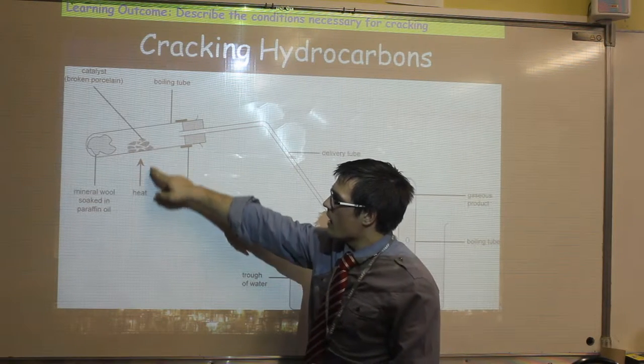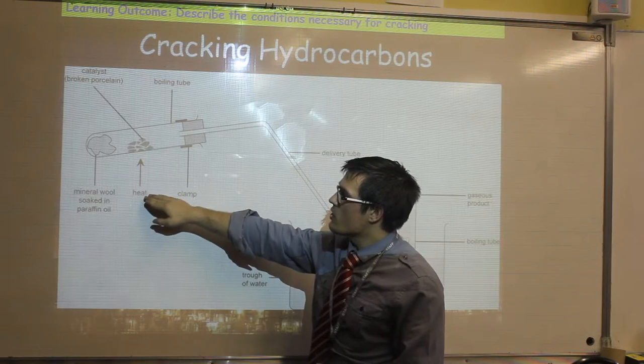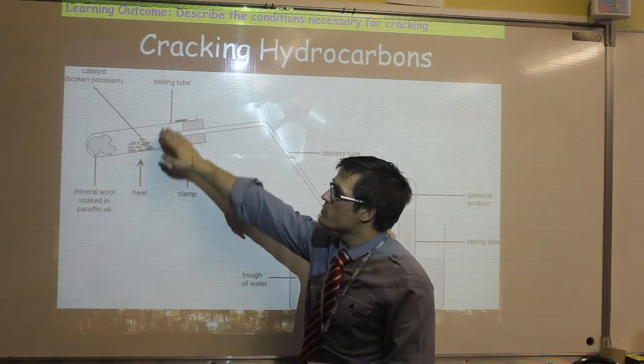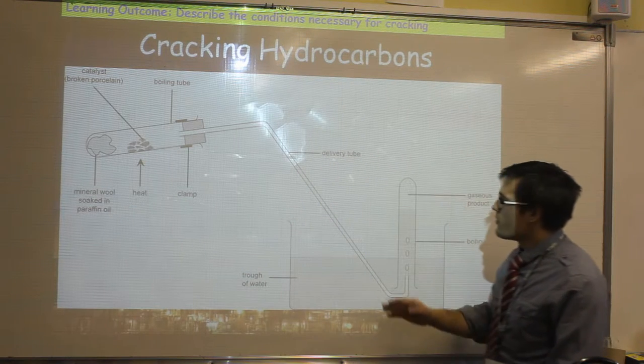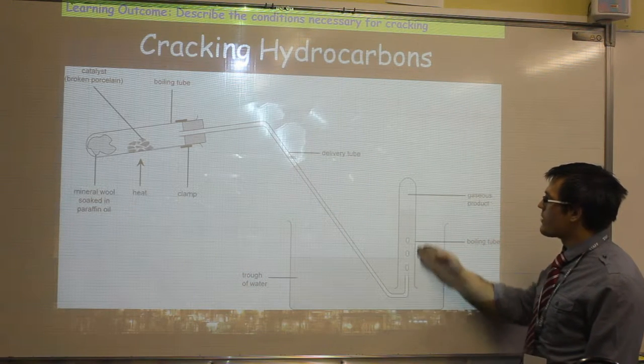Instead, we use an arrow and write heat underneath to show how we heat the catalyst, which is broken porcelain rather than just the mineral wool. We've also included the trough and how we've collected the gas.